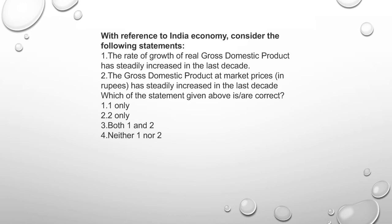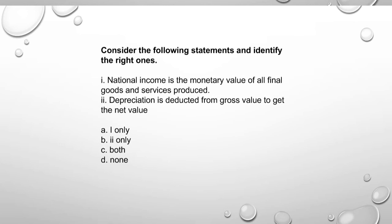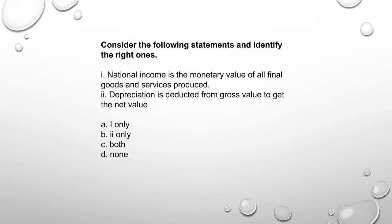Next: Consider the following statements and identify the right ones. National income is the monetary value of all final goods and services produced — correct. Depreciation is reduced from gross value to get the net value — correct. Both statements are correct.